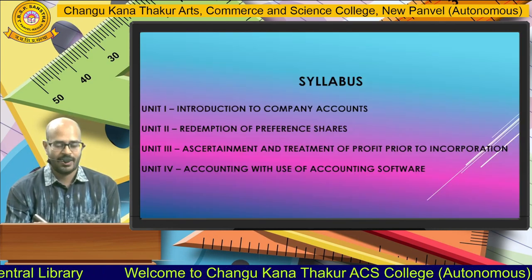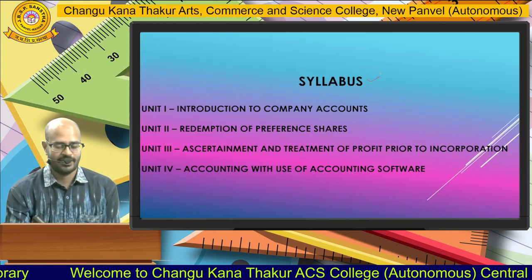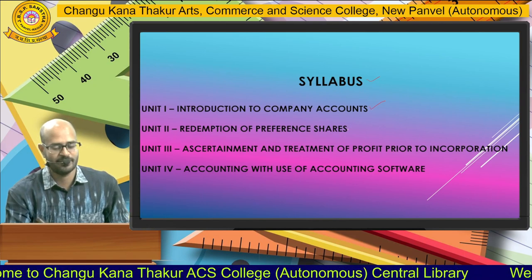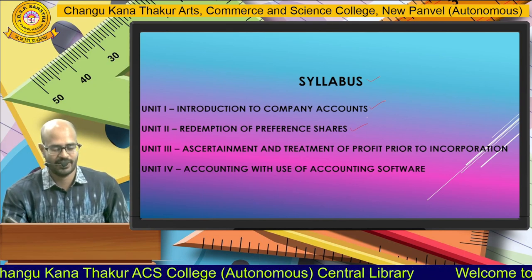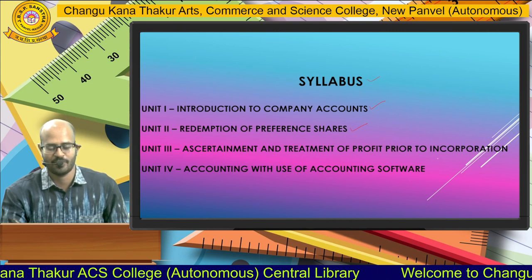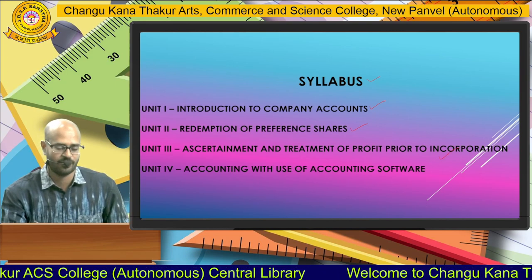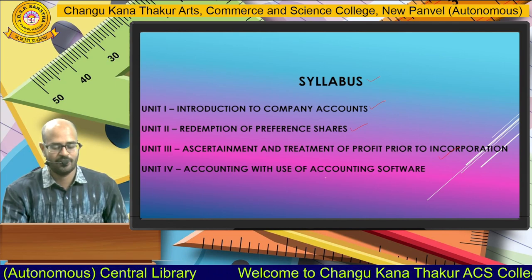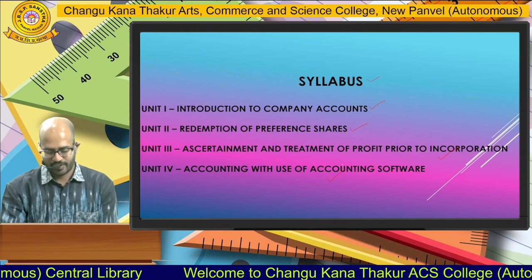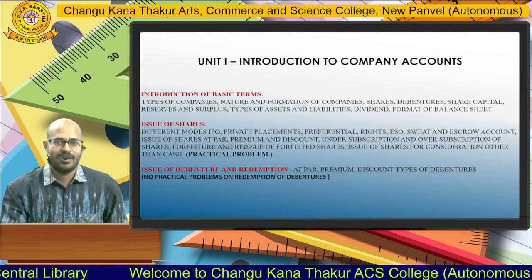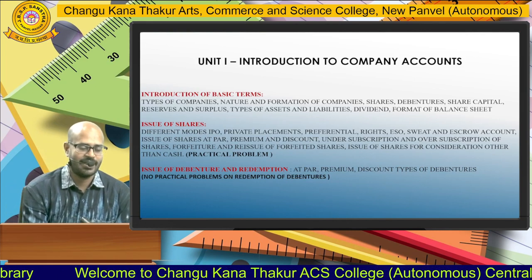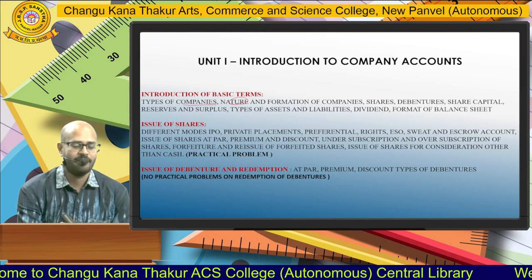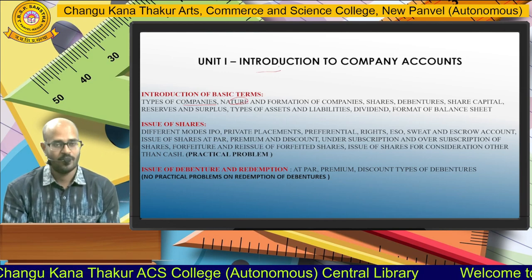In our syllabus we have 4 units. The 1st unit is Introduction to Company Account, 2nd unit is Redemption of Preference Shares, 3rd unit is Ascertainment and Treatment of Profit Prior to Incorporation, and 4th unit is Accounting with the Use of Accounting Software. In this lecture we are going to discuss types of companies and nature of companies of unit number 1. So let's start.